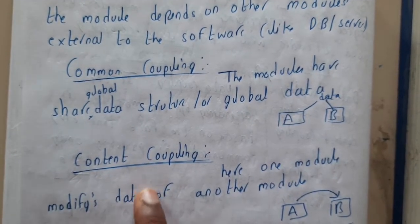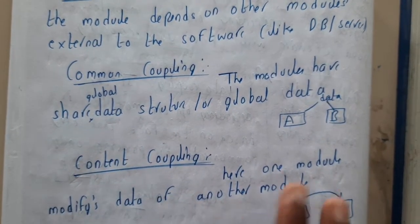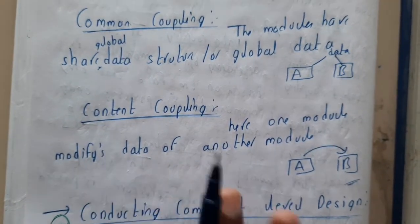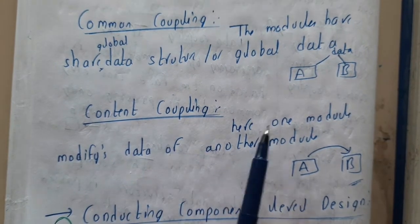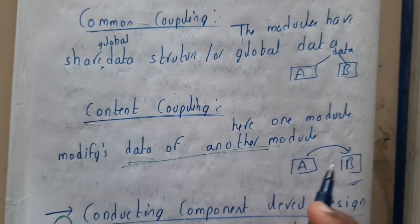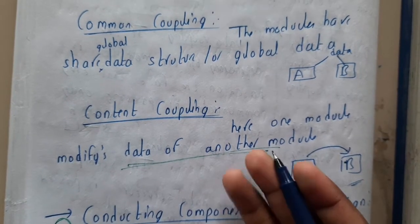Content coupling - this is what we don't want. If you ask which of the following should not exist in coupling when making a design, this should not be there. Here one module modifies the data of another module. Is it a good thing? This module can modify this data - is it safe? No.